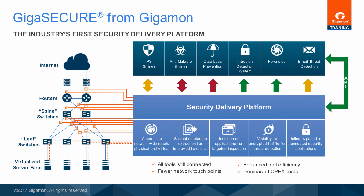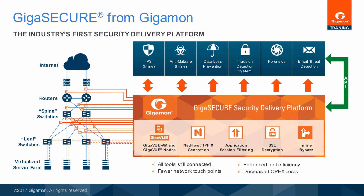Deploying security tools to address present and future threats can be problematic. There are multiple points of failure, traffic bottlenecks, and scalability challenges. To address these challenges, the Gigaview HC series nodes host key features in support of the Gigasecure Security Delivery Platform, the industry's first security delivery platform. Examples include NetFlow generation, application session filtering, SSL decryption, and inline bypass. Refer to the Gigasecure training module, available in the Gigatech training series, for more information about Gigasecure.